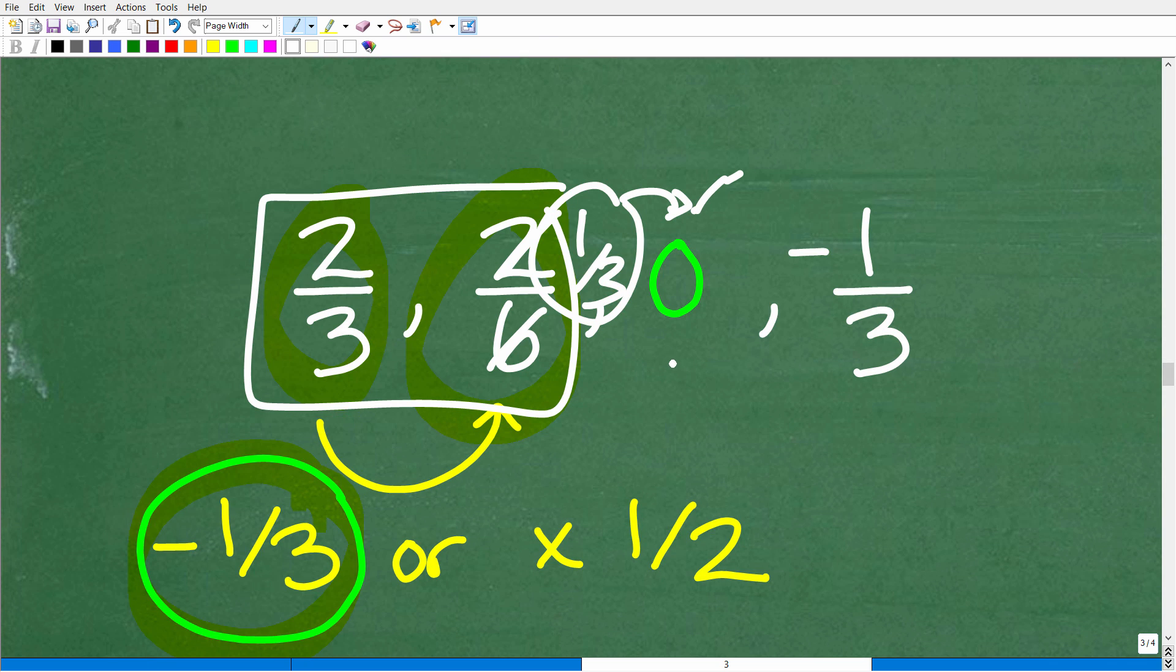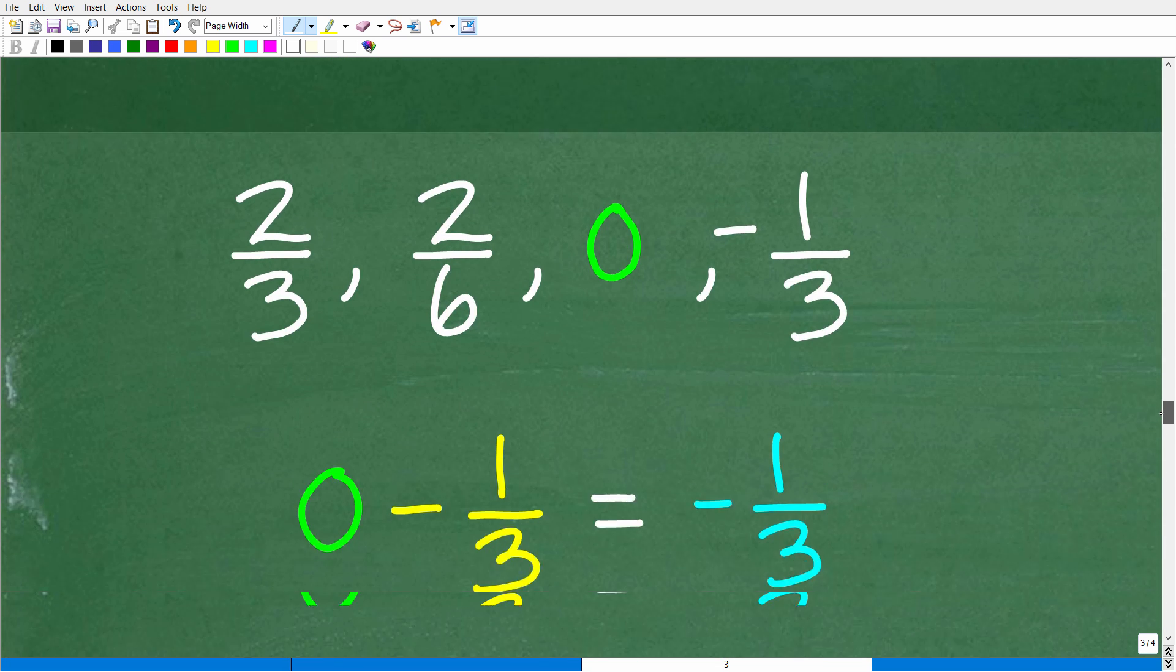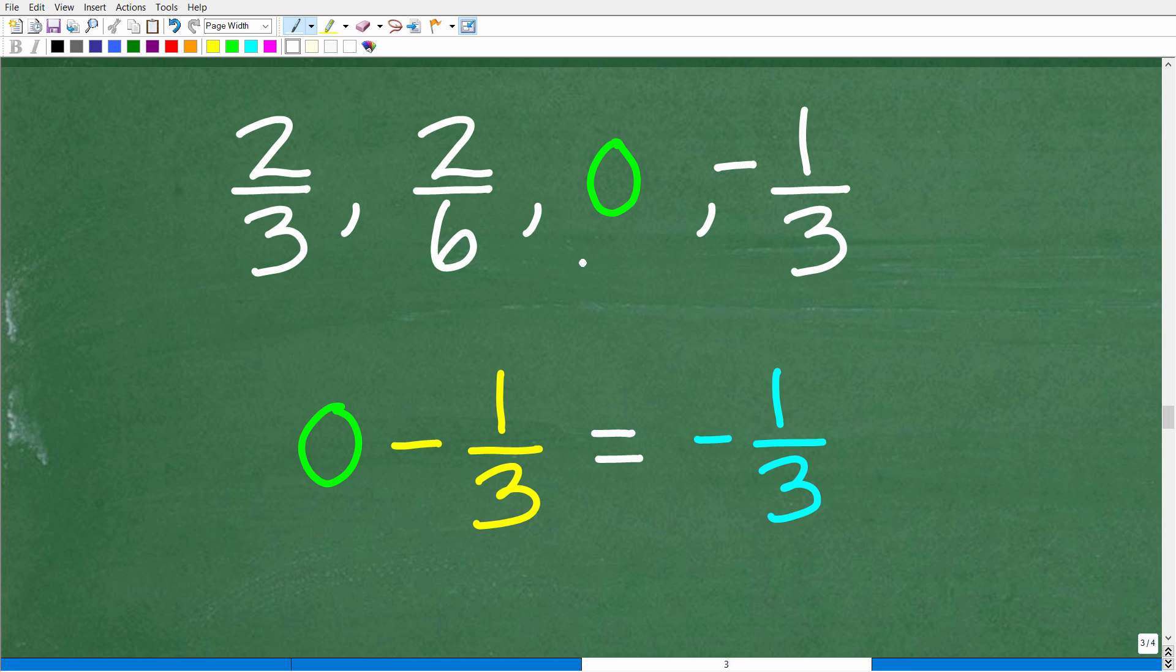Now what we need to do is test to see if zero minus one-third is, in fact, one-third. Okay. So zero, if we subtract a one-third from zero, indeed, zero minus one-third is negative one-third.